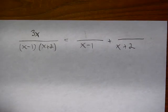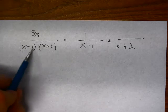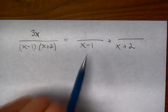Okay, so the problem we are presented with is we want to take 3x over (x minus 1)(x plus 2) and decompose it into its partial fractions.